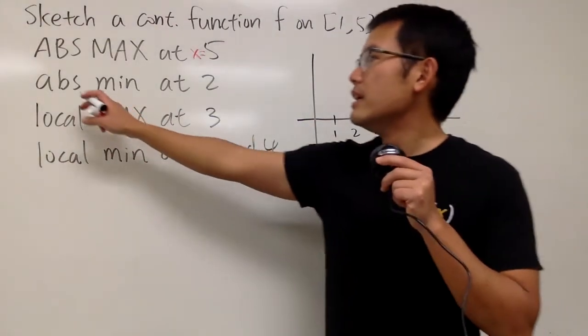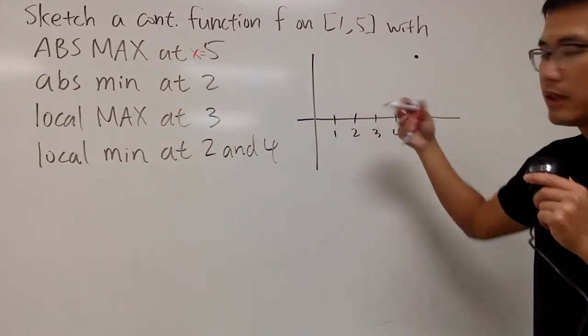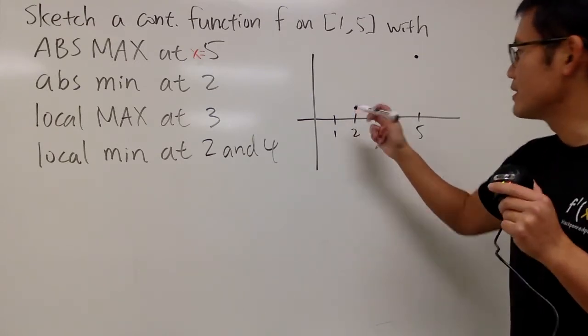And it says absolute minimum at 2. So when x is at 2, well, it has to have the lowest y value. You can put it down below here if you would like, but I will just keep it right here, maybe somewhere.